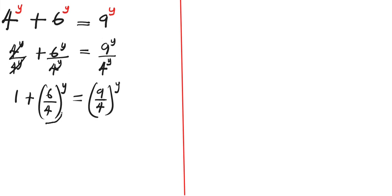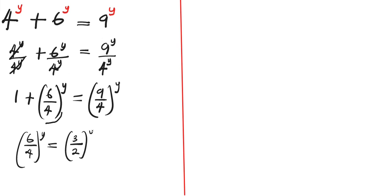Let's concentrate on (6/4)^y. This can be written as (3/2)^y, because 2 cancels into 6 three times and into 4 two times.